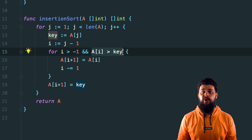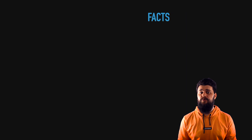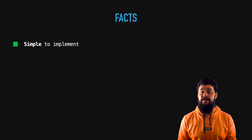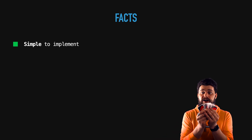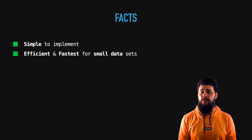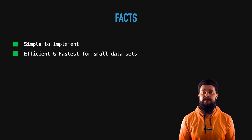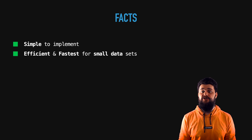Now that we've learned about the insertion sorting algorithm and implemented it in Go, let's look at a couple of facts. Starting with the positives: it's simple to implement, simple to understand, and works very much like sorting a deck of cards. Another good characteristic is that it's very efficient — however, it's efficient for small data sets. In fact, the fastest implementations of sorting algorithms like QuickSort internally check the length of the data set, and if it's small enough, they internally use insertion sort.